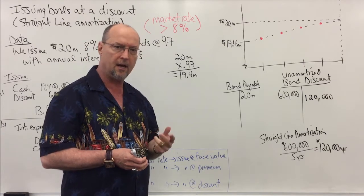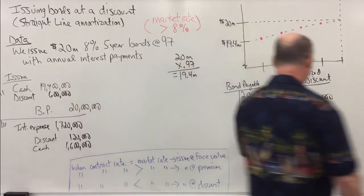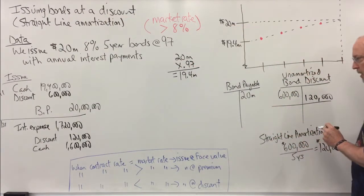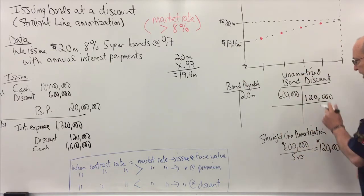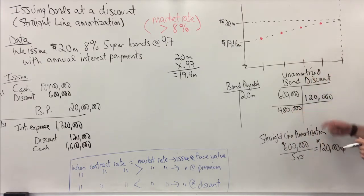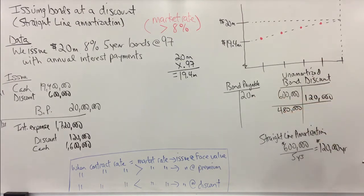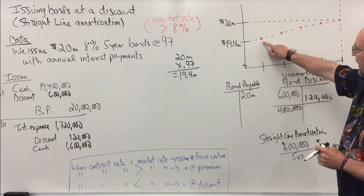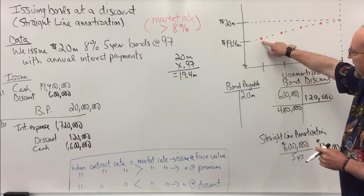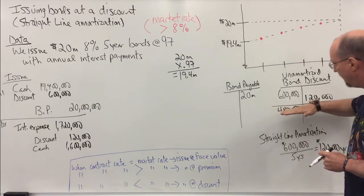Now on the balance sheet, we have to report bonds at book value, which is the face value minus the unamortized discount. Now at the end of year one, we've amortized one year's worth of interest, and that's what a bond discount represents—deferred interest. And so now $20 million minus $120,000—excuse me, $480,000—okay, our book value will be $19 million $520,000. Okay, which is $20 million minus the $480,000.